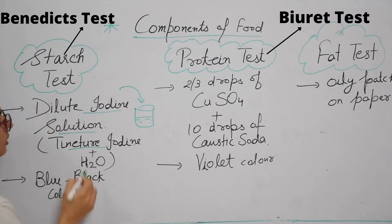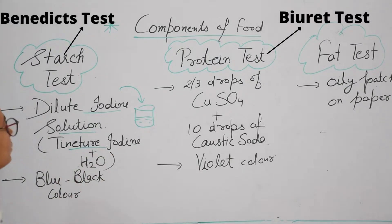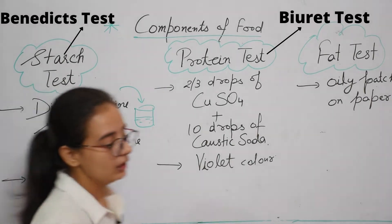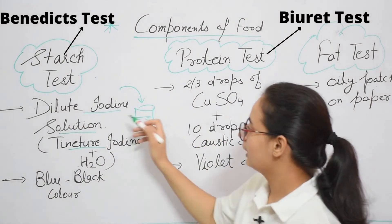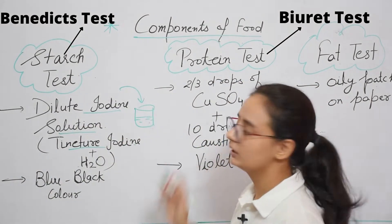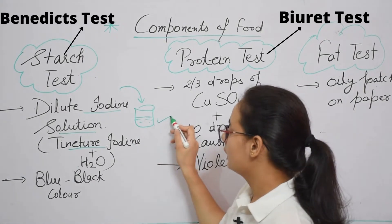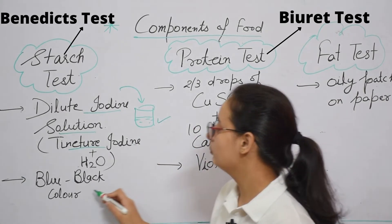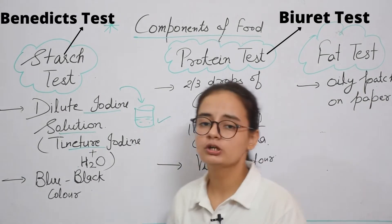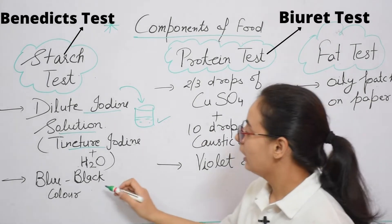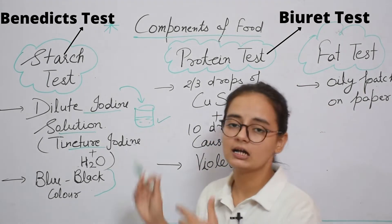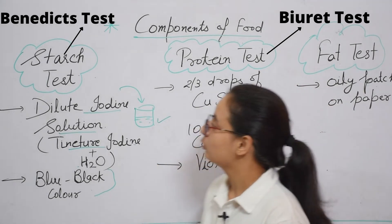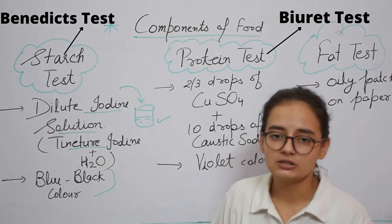When we add the dilute iodine solution to the water, the color of the solution will change to blue-black. If the color turns blue-black, it means that the food has starch.